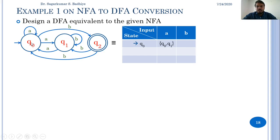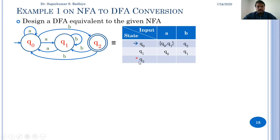In q0, if 'b' is the input, the next state is q2, represented like this in the transition table. Similarly, for state q1: in q1 if 'a' is the input, the transition is to q0. In q1 if 'b' is the input, the transition is to q1 only, so the next state is q1. q2 is the final state, represented with a star in the transition table or marked with a circle in the transition diagram.